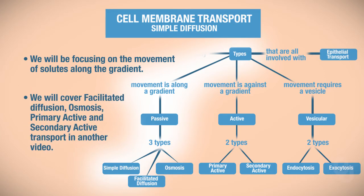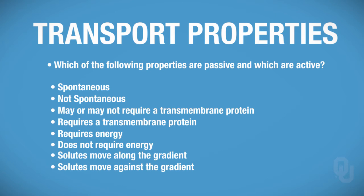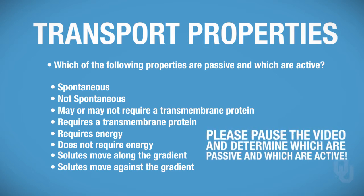You'll have separate video lectures for facilitated diffusion, osmosis, primary active transport, and secondary active transport. Before we begin with this section, I would like for you to look at the various transport properties listed on this slide — for example, spontaneous, not spontaneous, may or may not require a transmembrane protein. For each of these properties, decide whether it's a property of passive transport or active transport. Please pause the video and decide which properties belong to which type of transport.